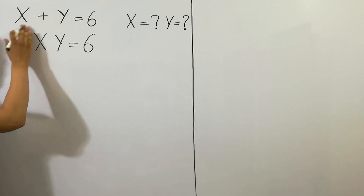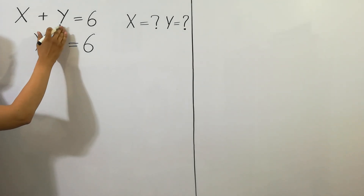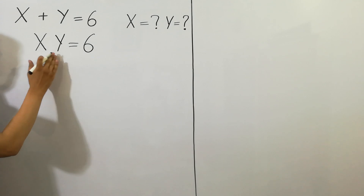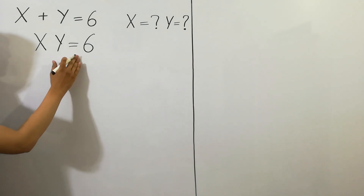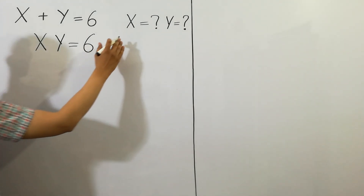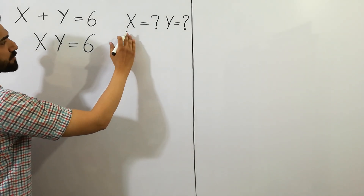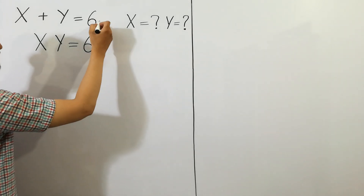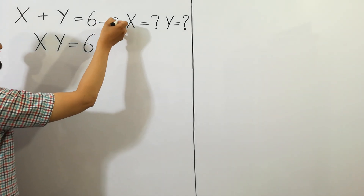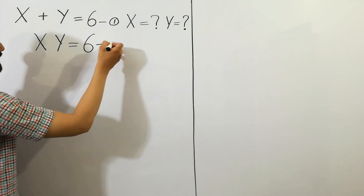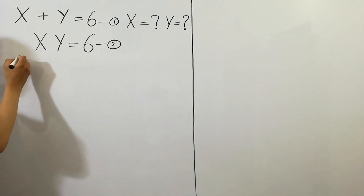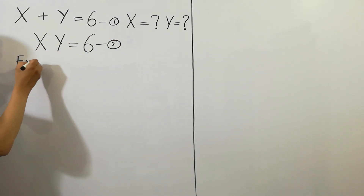Here x plus y is equal to 6 and xy is equal to 6. What would be the values of x and y? Let's suppose that this is equation number 1 and this is equation 2.